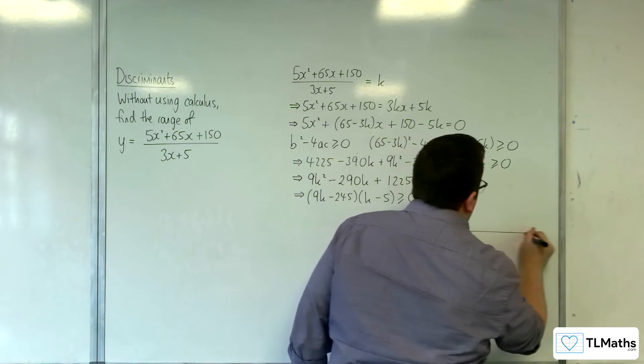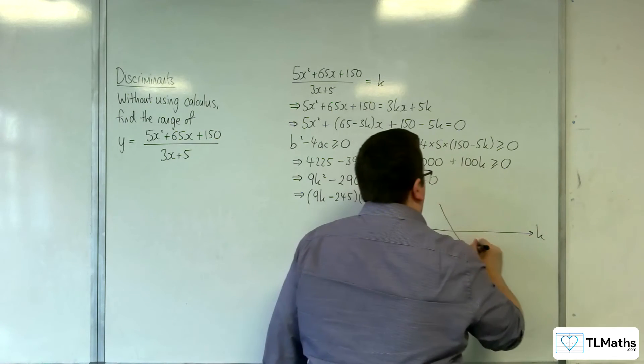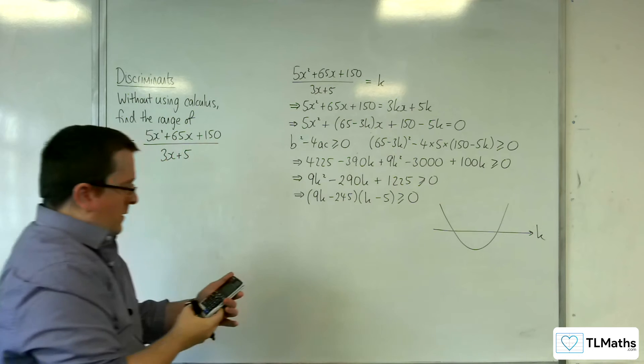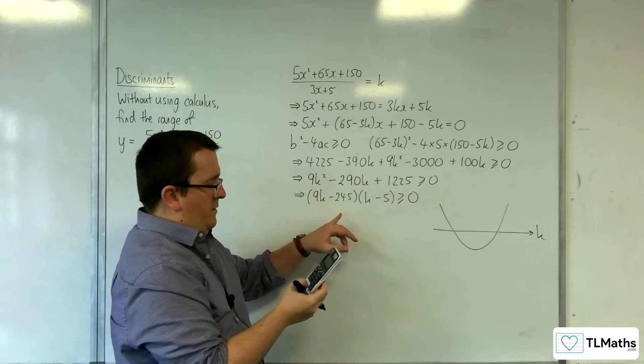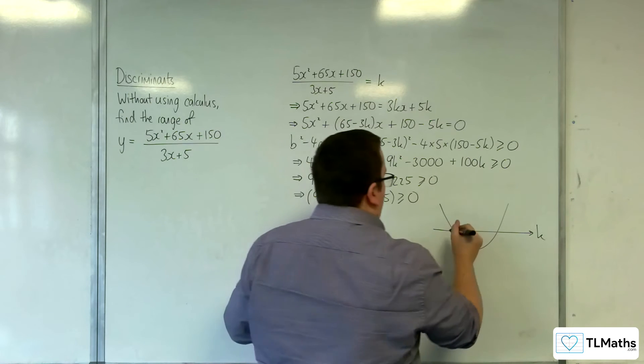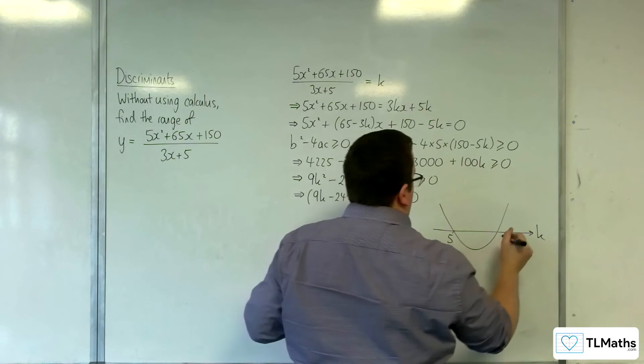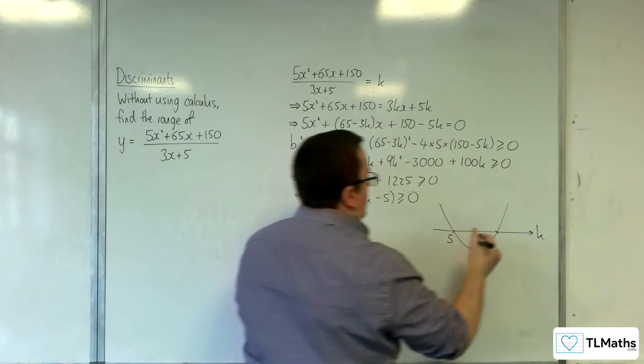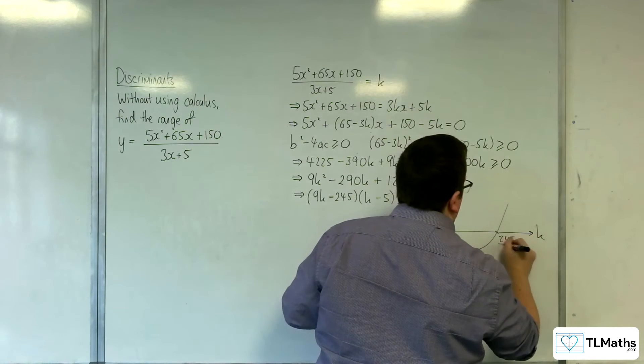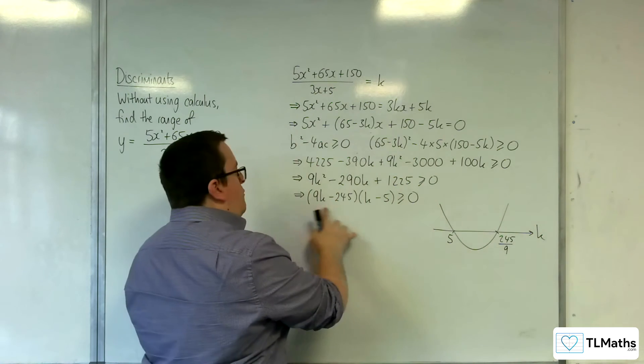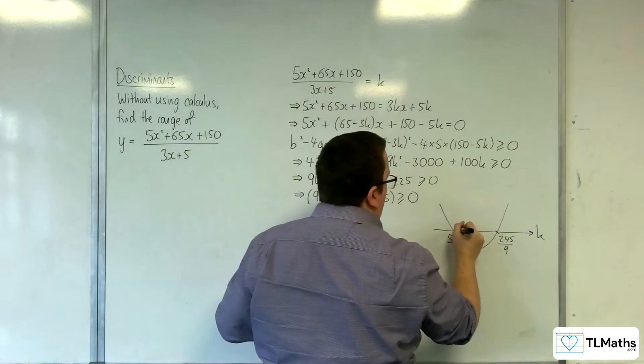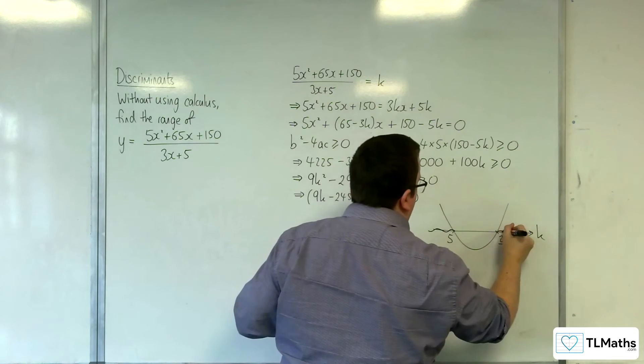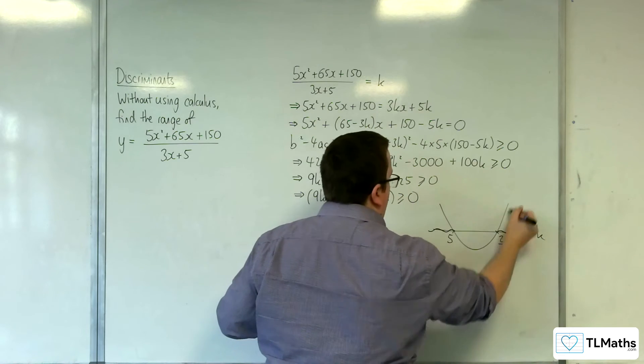So this is a parabola on the k-axis, now that 245 over 9 is 27.2 recurring. So this will be 5, and this will be the 245 over 9. So where is the parabola above or equal to the k-axis? Well, it's above or equal to it there and there, that portion and that portion.